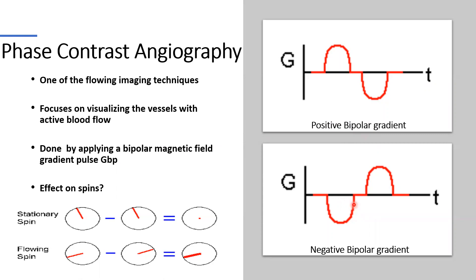This bipolar gradient pulse has no effect on stationary spins, but spins which have a velocity component in the direction of the gradient will be affected by the bipolar gradient pulse. This means if the bipolar gradient pulse is placed in one of the imaging sequences along with the other gradient, it will not affect the image because all we have done is adding a phase shift to the moving spins.